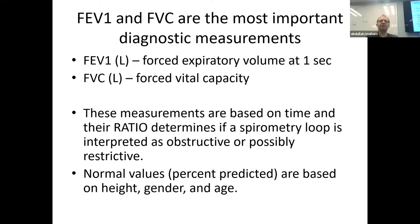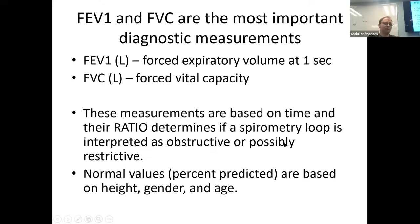The most important diagnostic measurements in spirometry are FEV1 and FVC. FEV1 is the volume exhaled at one second; FVC is your entire exhalation. Their ratio determines whether a spirometry loop is interpreted as obstructive, normal, or possibly restrictive. Normal values are based on height, gender, and age.